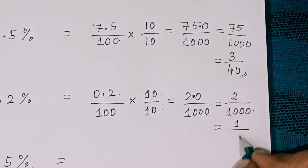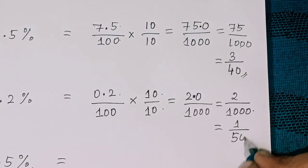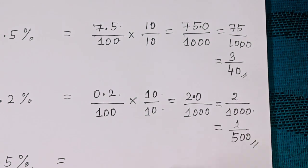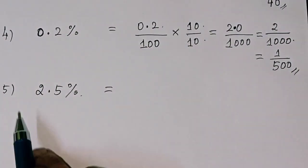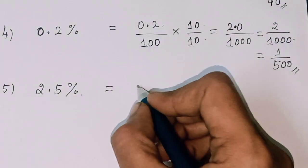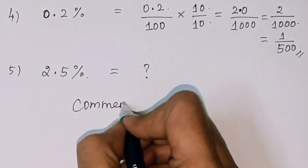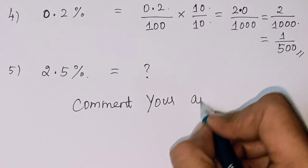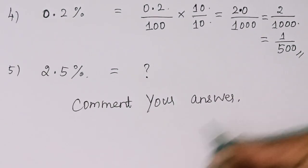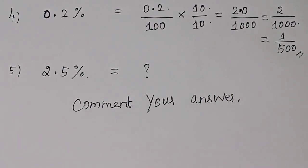Simplify 2 by 1000: divide both by 2, giving 1 by 500. This is the answer. Fifth one: 2.5 percent — comment your answer in the comment section. Please subscribe to Harrymax channel. Thank you.